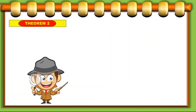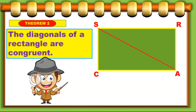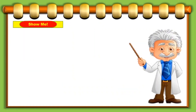Now let's move on to theorem number two. In theorem number two, it states that the diagonals of a rectangle are congruent. So we have here diagonal SA and we have diagonal CR. So segment SA should be equal to segment CR. The diagonals there — segment SA is congruent to segment CR.